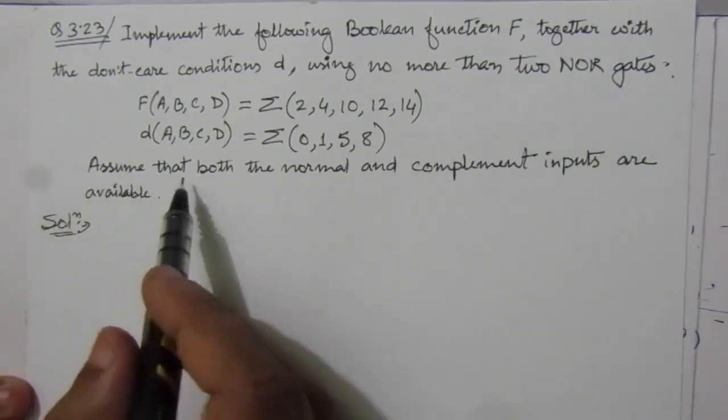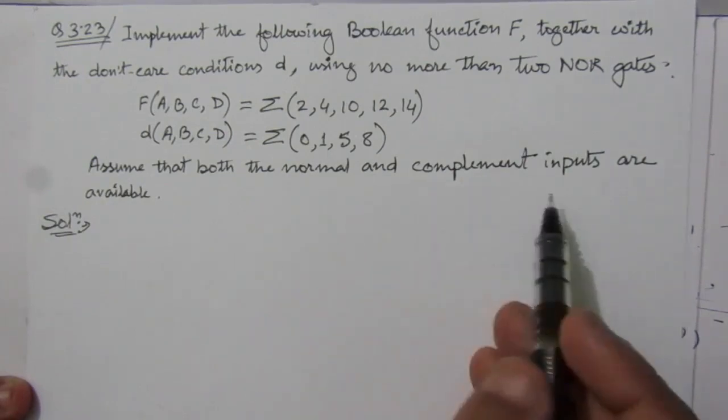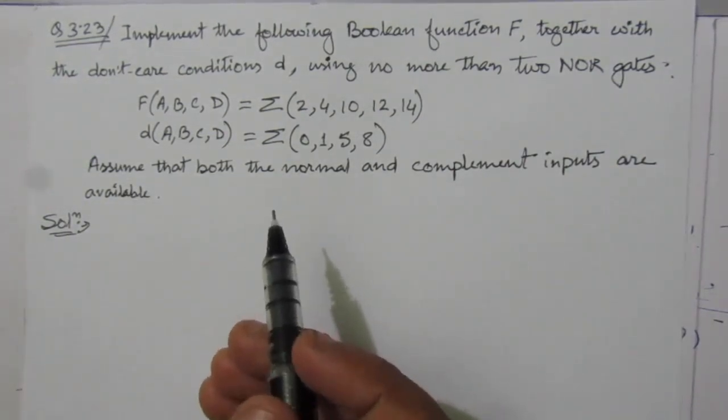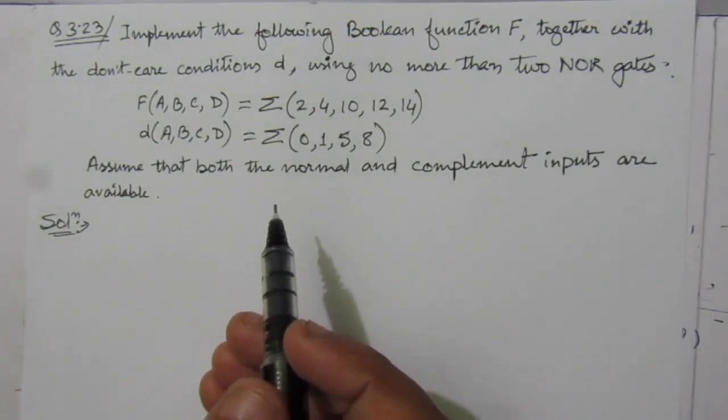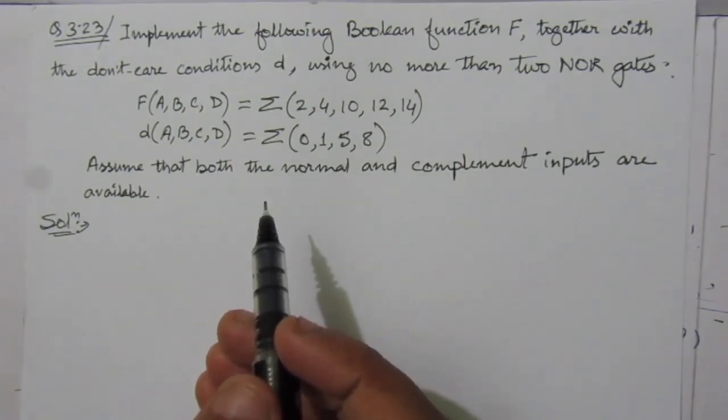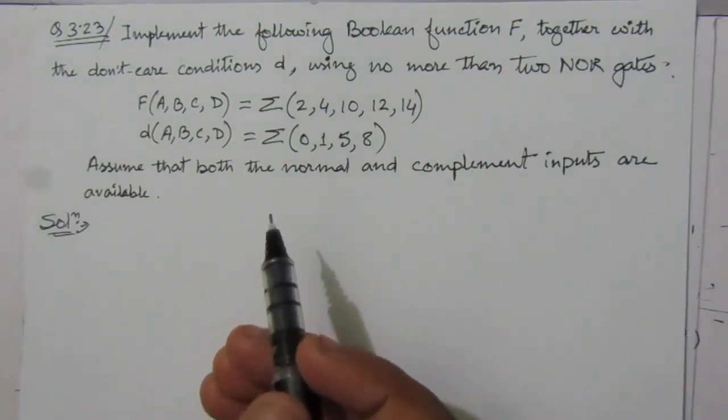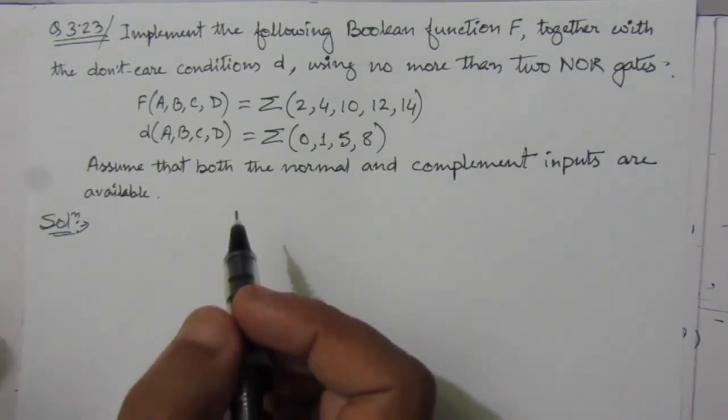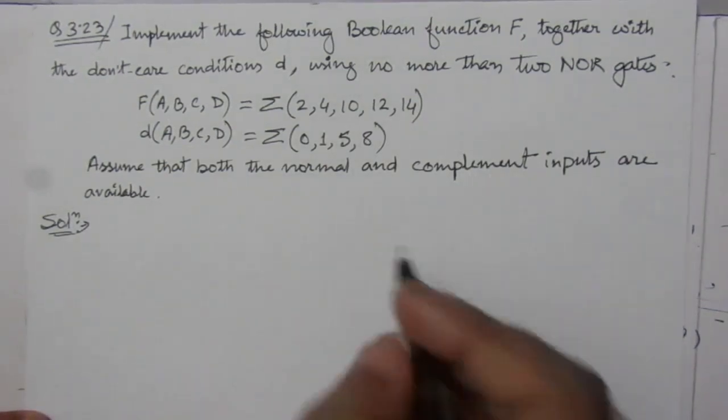Assume that both the normal and complement inputs are available. That means we can give directly a normal input, suppose A, and complemented input A bar. We can give it directly to the NOR gate. So first of all, let us make the K-map and simplify this Boolean function.